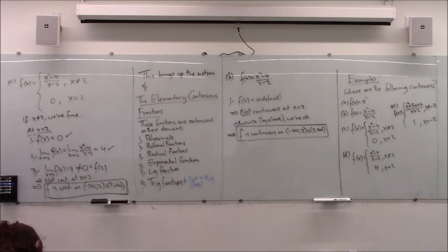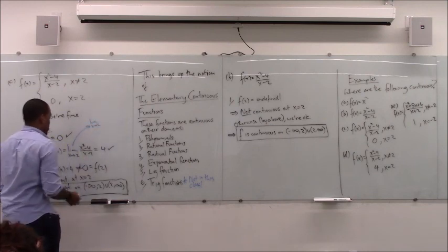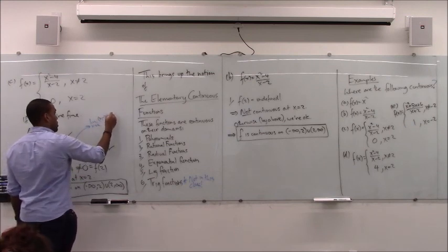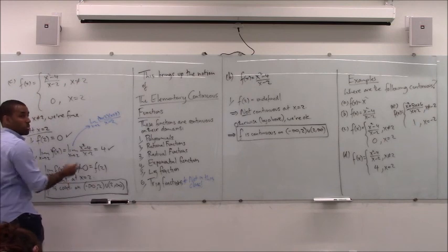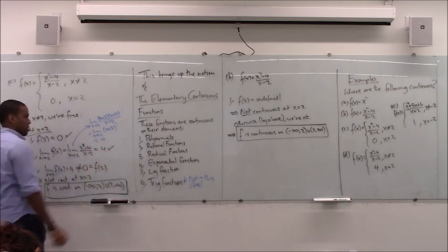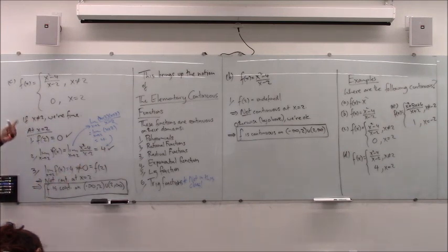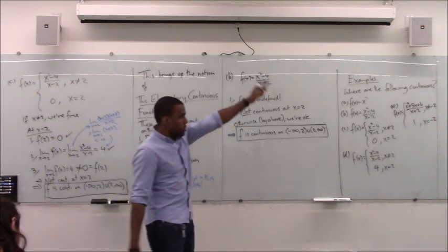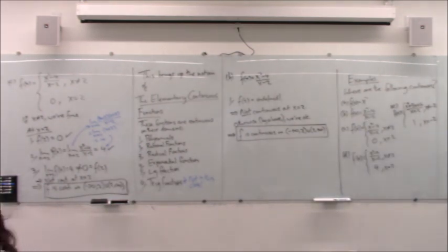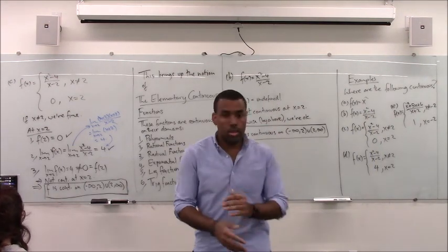Student: How did you get 4 in step two? Instructor: You go through the limit steps — try to plug in, you can't, so simplify: factor to get x minus 2 times x plus 2 over x minus 2, those cancel, leaving x plus 2, then plug in 2 to get 4. So step one works, step two works, but step three they weren't the same — not continuous. Do problems D and E; we'll start class with those tomorrow and then move on.